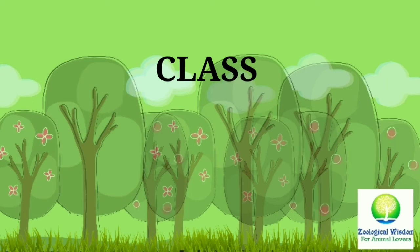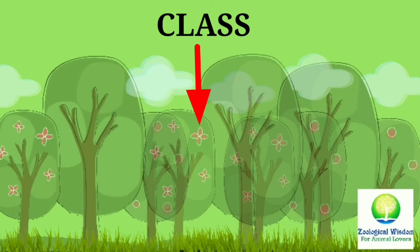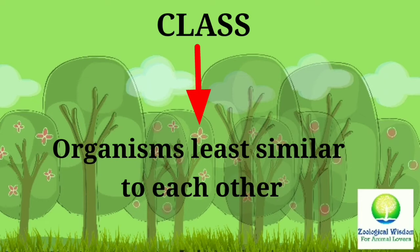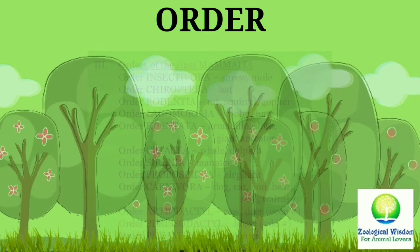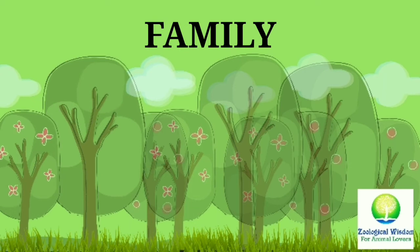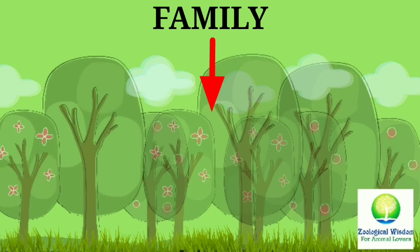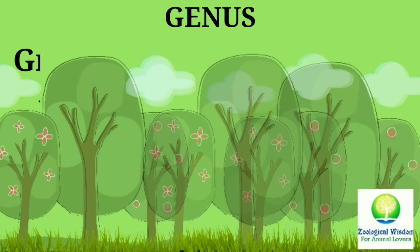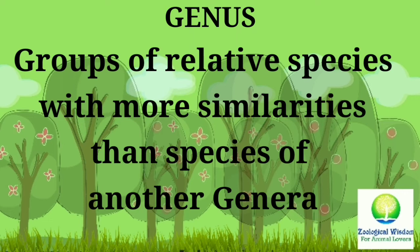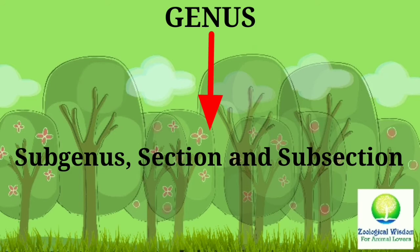Division is divided into one or more classes; the subcategory of class is subclass or series, and a class consists of organisms least similar to each other. Order was introduced by Linnaeus in 1735; the subcategory of order is suborder. An order is divided into one or more families, with subfamily, tribe, and sub-tribe as subcategories. The plural of genus is genera; it comprises groups of related species sharing more characteristics in common, with subgenus, section, and subsection as subcategories.